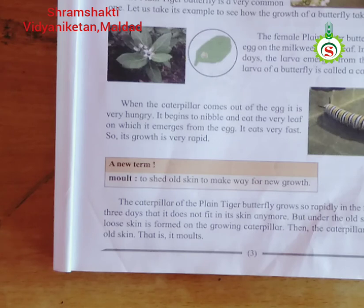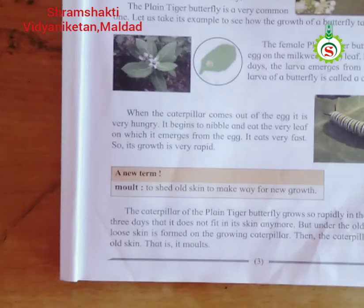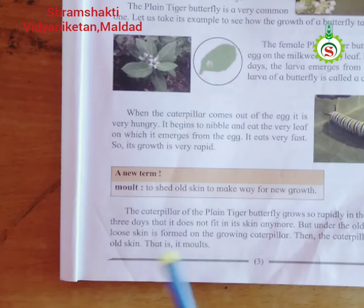Sometimes while cleaning the peas, we find tiny green things living inside. They belong to the larval stage of a butterfly's life cycle. From the first two to two-and-a-half days, the larva of the plain tiger butterfly grows so big that it does not fit inside its skin.